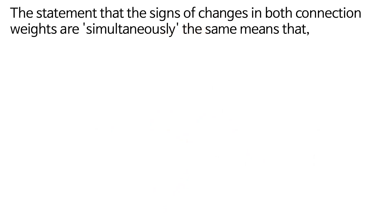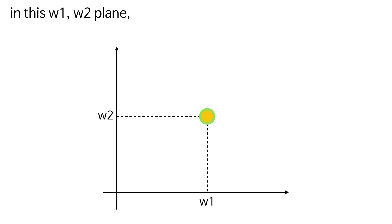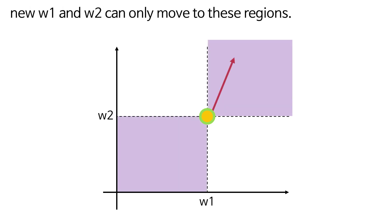The statement that the signs of changes in both connection weights are simultaneously the same means that in this W1, W2 plane, new W1 and W2 can only move to these regions.